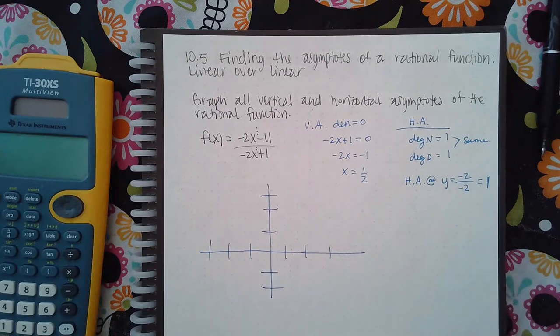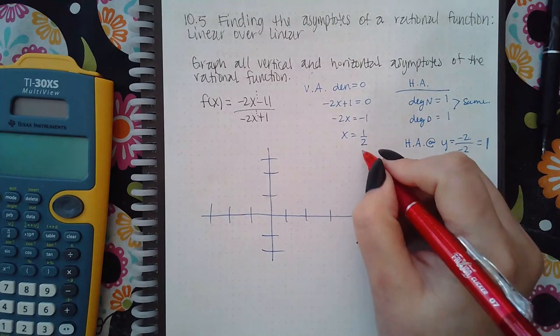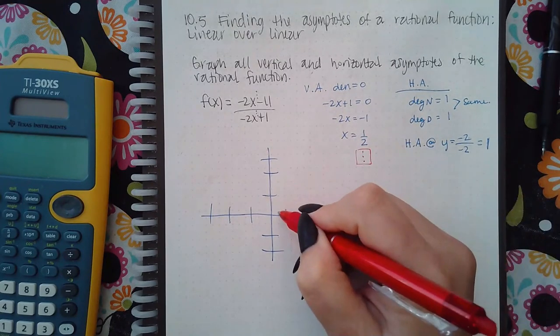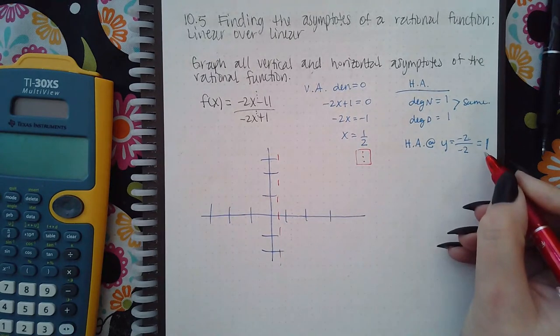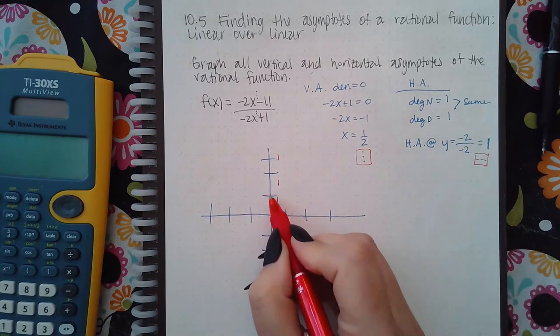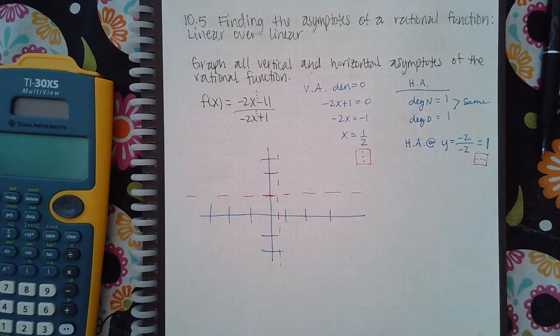To graph my asymptotes, I'm going to take the dotted line box and I'm going to place it at one half, not one. And then I'm going to take the horizontal line icon and I'm going to place it at one. When I do that, it'll draw the line like this. And so that's how I draw those asymptotes.